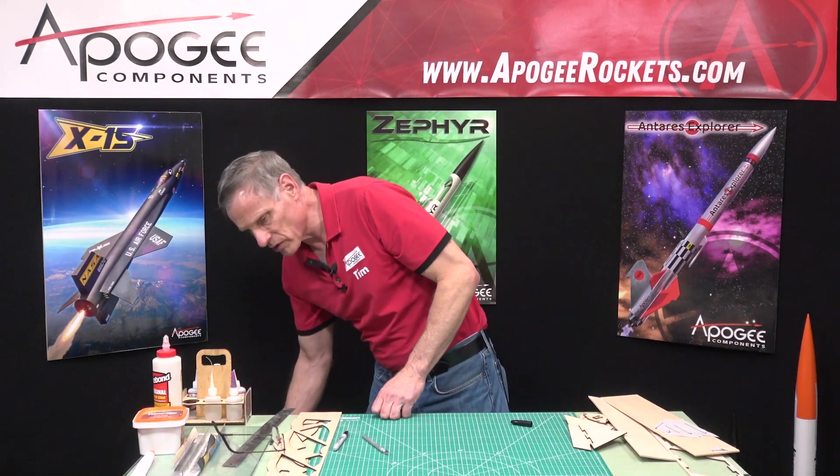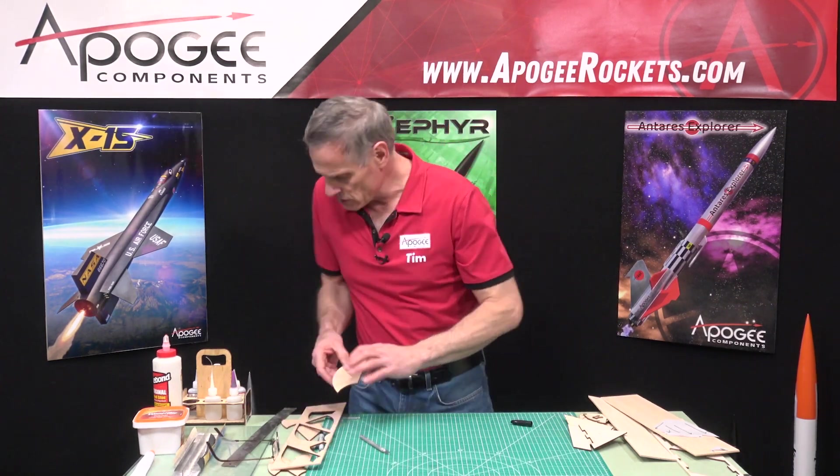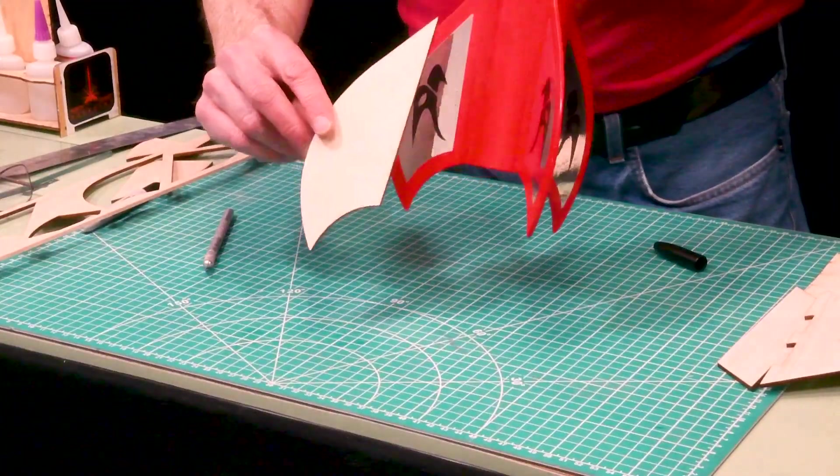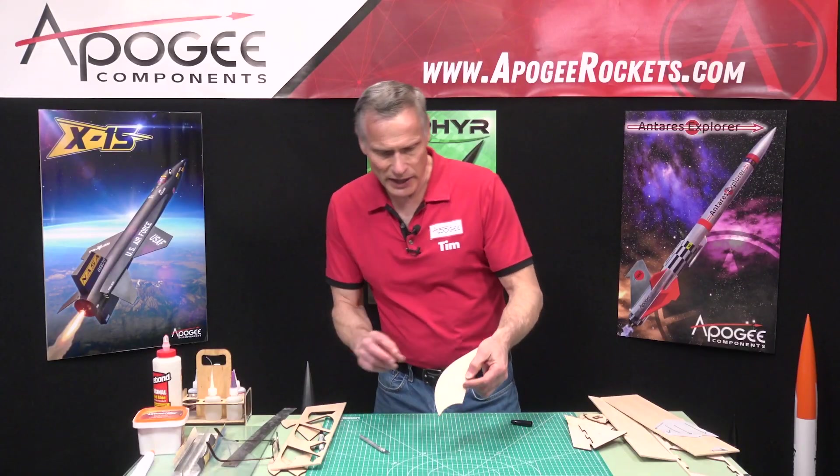One of the problems, so I could take this piece of wood here. So this is this fin right here. And this is just one piece of wood. But if the rocket came down, you could see that it could easily snap right here.